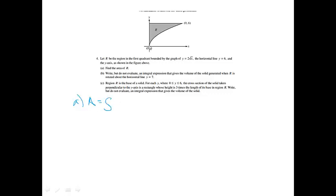All right, find the area of R. For part A, the area is going to equal an integral from x value to x value, so it's going to go from 0 to 9. And then it's always just going to be top minus bottom. The top is the horizontal line 6, and then minus the bottom is the curve 2 times the square root of x. The square root of x is actually x to the 1 half.